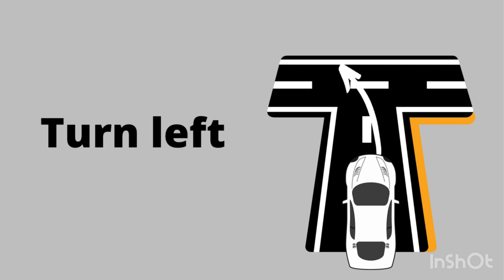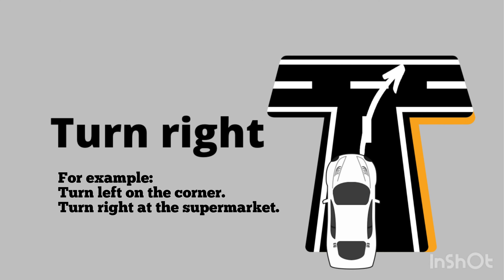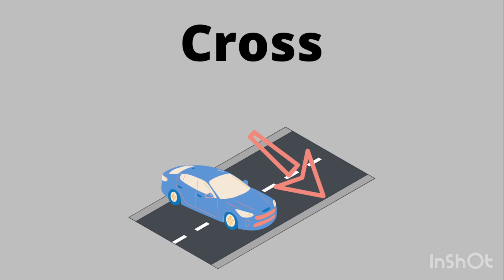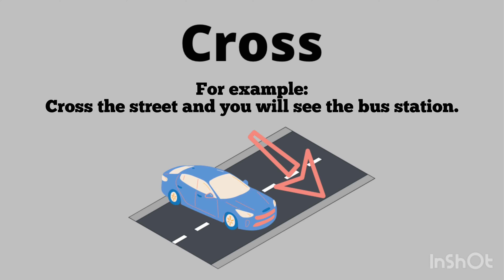Then we have turn left and on the other side we have turn right. For example: turn left on the corner, or turn right at the supermarket. The next expression is cross — when you see a zebra crossing, you can cross the street. For example: cross the street and you will see the bus station.